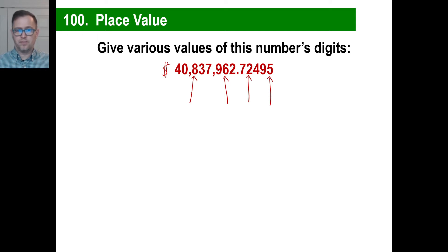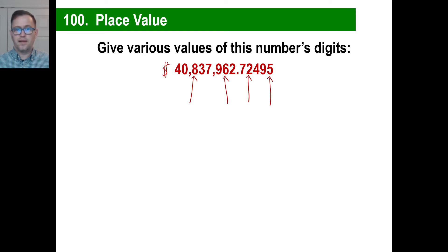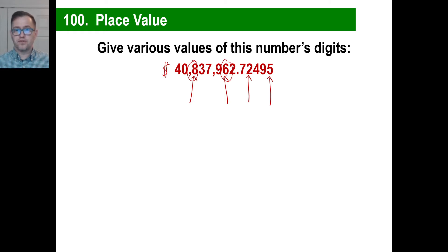Well, we know in our system — our system of writing numbers — we start with 1s, 10s, 100s, 1,000s, 10,000s, 100,000s, and so on. So the actual value of this, if you stripped away everything else on both sides, would just be 800,000. That's 800,000. The 6 is in the 10s place in 962, so that signals to us 60.